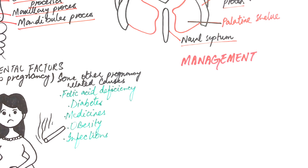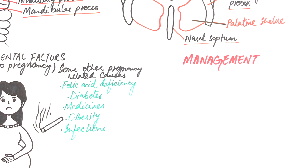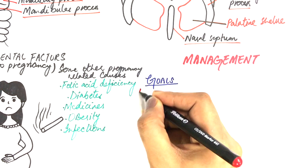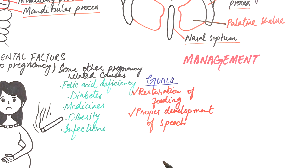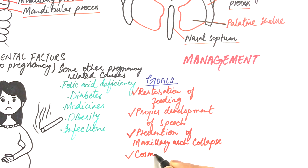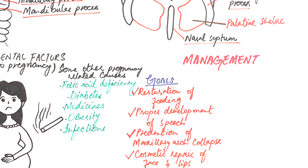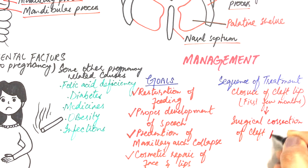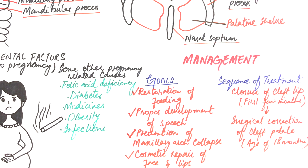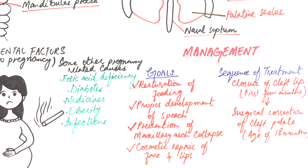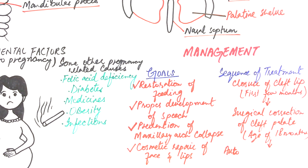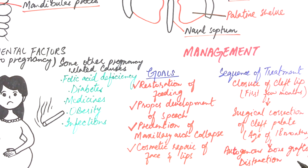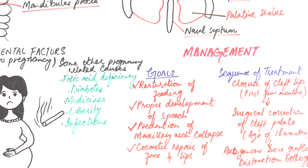The management of patients with orofacial clefts is challenging. Treatment should aim at restoration of feeding to the children, proper development of speech, prevention of maxillary arch collapse, and cosmetic repair of the face and lips — which is why treatment usually requires teamwork. The initial surgical treatment requires closure of the cleft lip in the first few months after birth, and the cleft palate is surgically repaired afterward at 18 months of age. If the palate is not surgically closed by this time, the child may develop abnormal speech. Later in childhood, autogenous bone grafts can be placed in the area of the alveolar bone defect, and distraction osteogenesis of the maxilla can prove helpful in patients whose palatal scarring limits the growth of the palate.